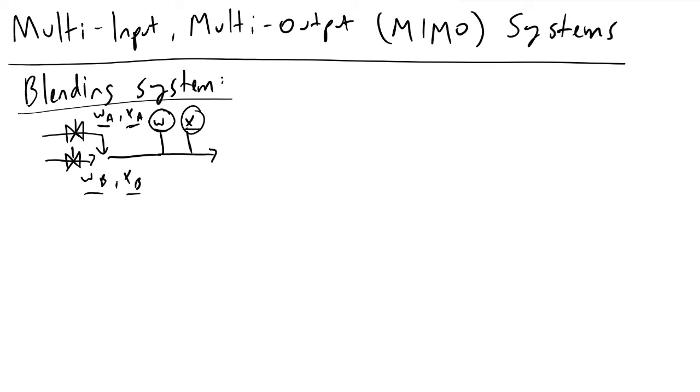If we begin to analyze this system as we have in the past, our inputs u1 will be wa, which is the flow rate, because we can just close or open up the valve, and our other input will be wb. Our output y1 will be the flow rate of our mixed stream, and y2, our second output, will be the composition of our mixed stream.